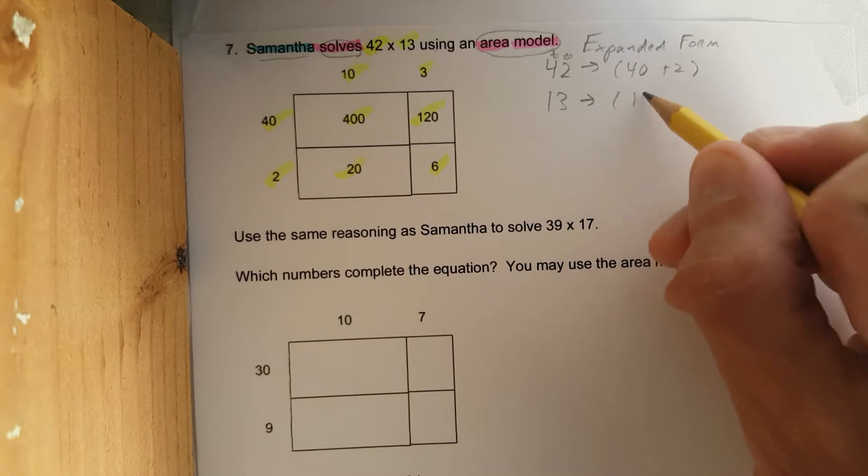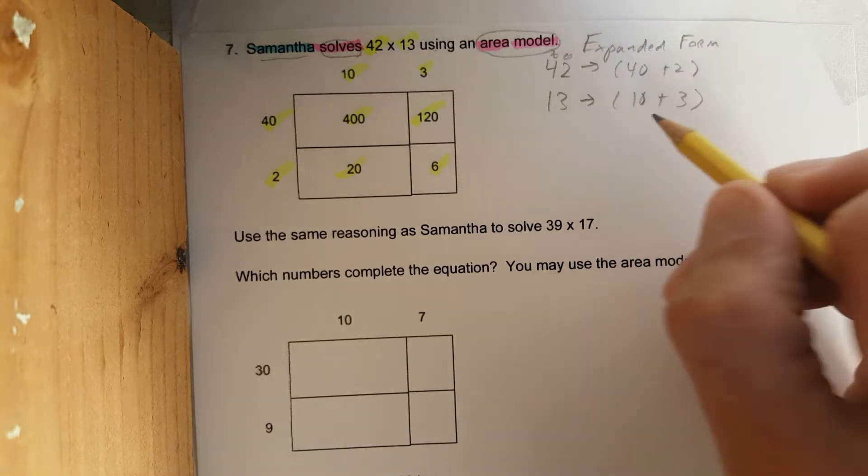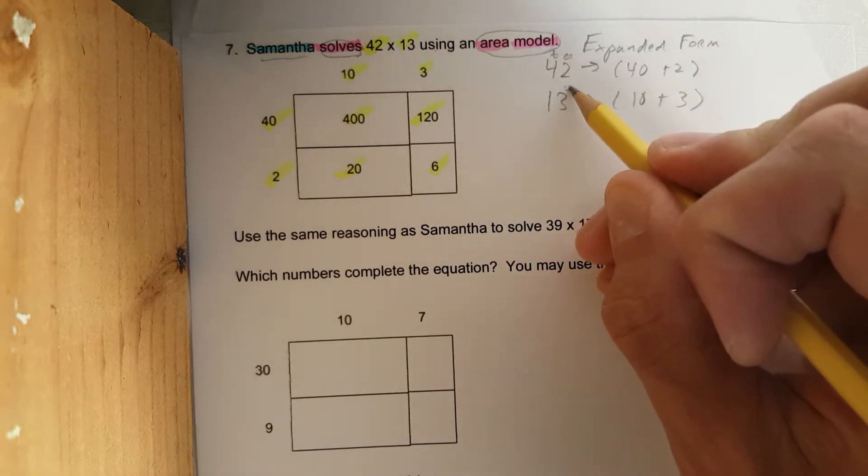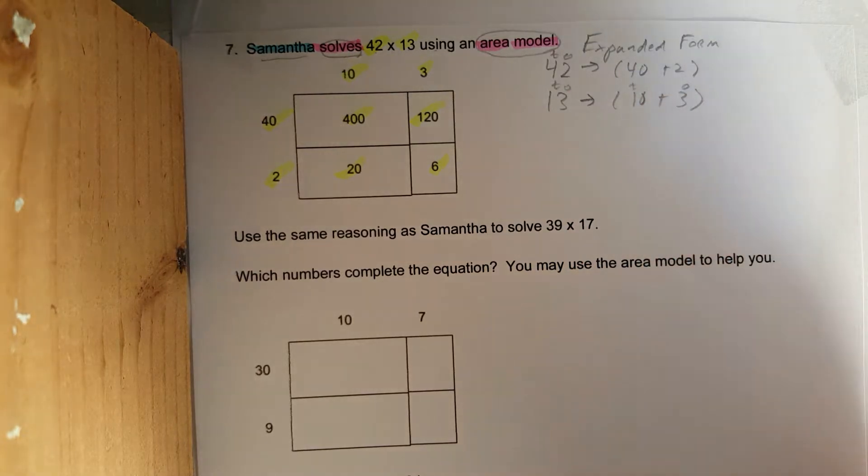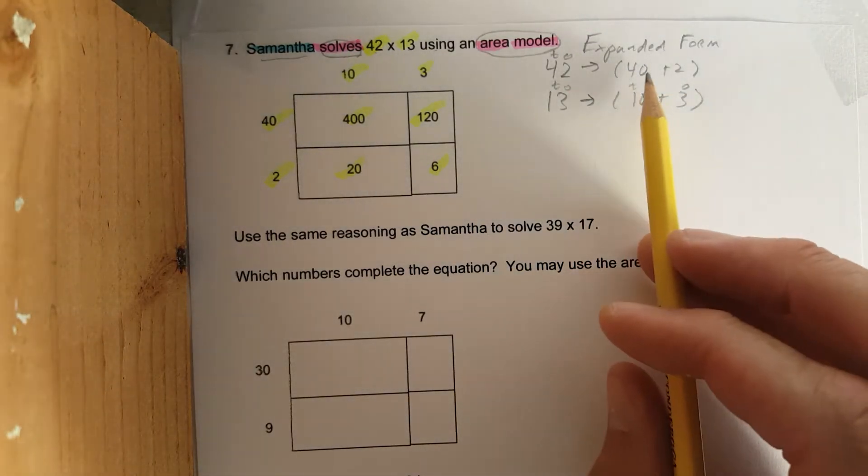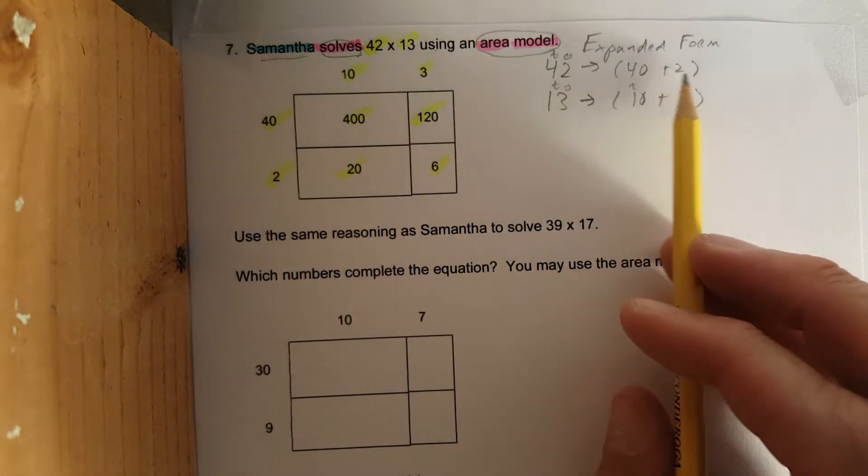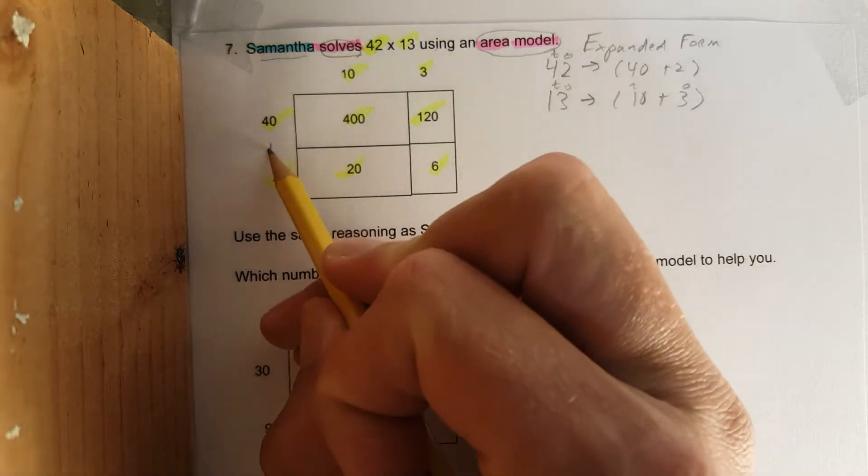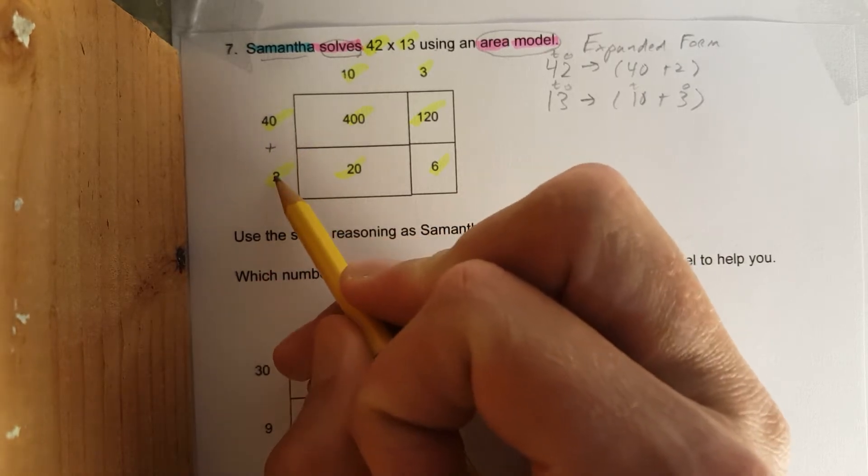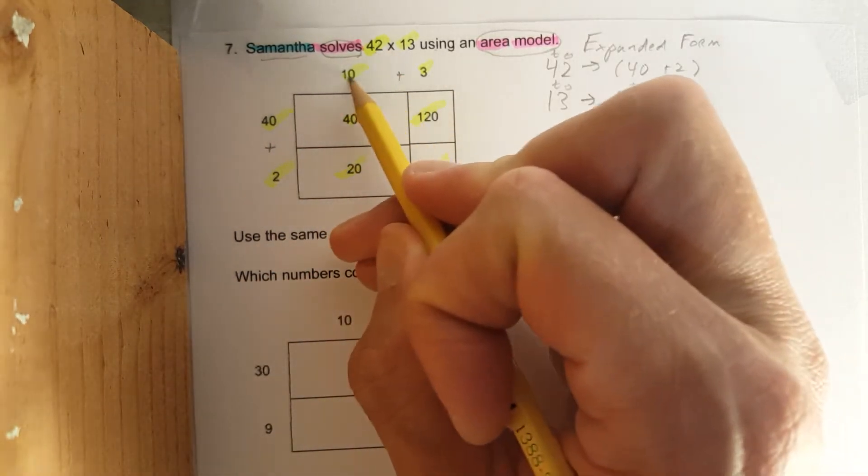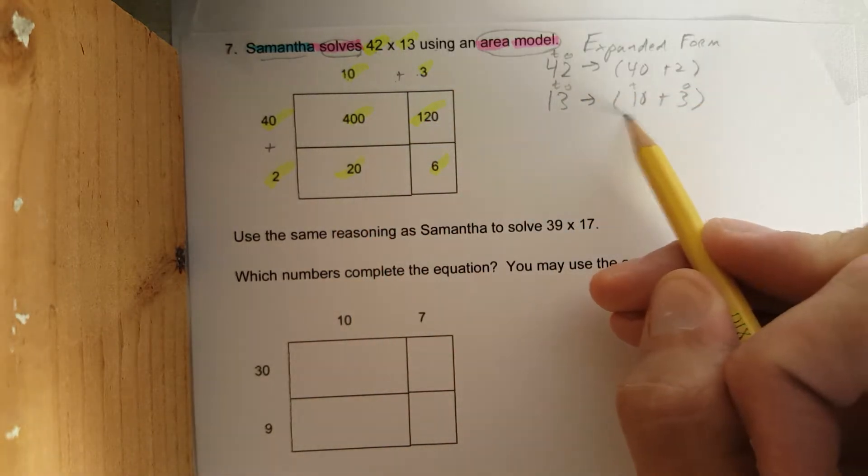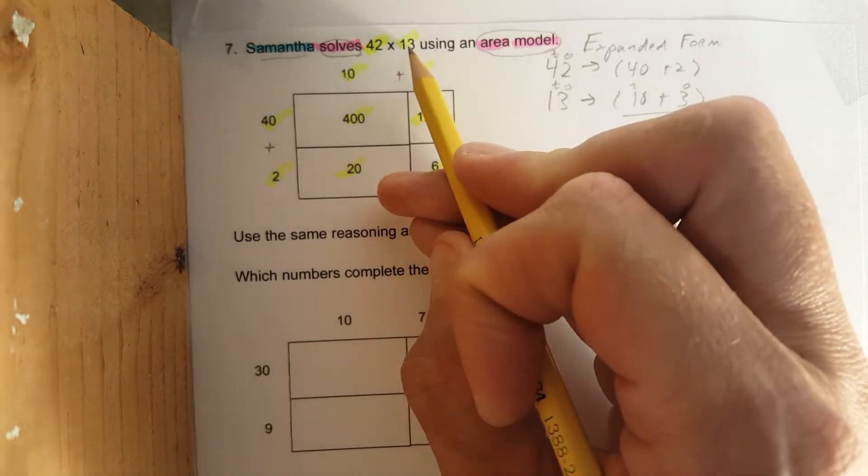We are expanding it: ones, tens, tens, ones. 40, we put the 40 right there, the 2 goes right below. 40 plus 2 is 42. Let's check up here: 10 plus 3, which we wrote right here, is the 13.